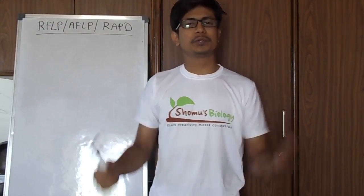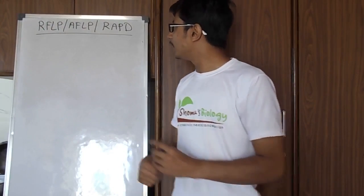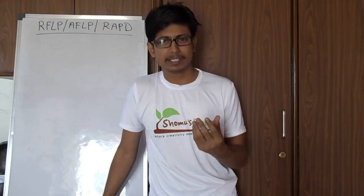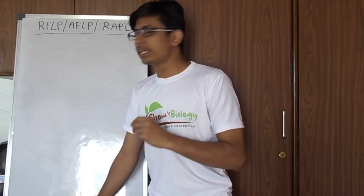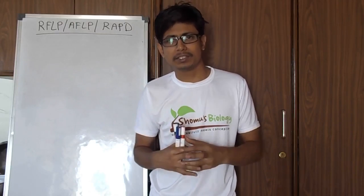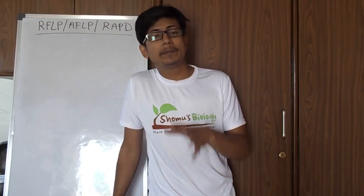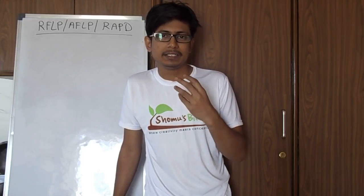Welcome back friends. In this video tutorial we'll be talking about three different techniques used to detect different types of genetic markers. The techniques are RFLP, RAPD, and AFLP. Many students have confusion between these three techniques, so let's talk about them at a basic level and distinguish between the three different processes. RFLP, RAPD, and AFLP are all methods to check the presence of genetic markers in a genome.